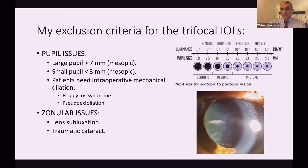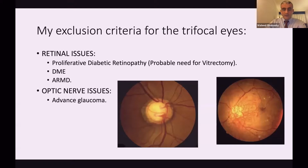I also get very good feedback from retina colleagues who struggle with pars plana vitrectomy in patients with trifocal implants. So I examine the back of the eye: if the patient has peripheral diabetic retinopathy, they are not a good candidate for trifocal IOL. Patients with optic nerve atrophy, partial or complete, or patients with advanced glaucoma and contrast sensitivity issues, are definitely not good for this kind of lens.